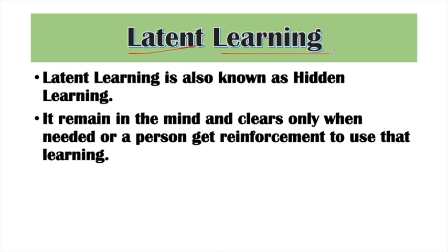Tolman also used the term Latent Learning — which is basically hidden learning. It remains stored in the mind and becomes clear only when needed, when a person gets reinforcement to use it. For example, a child daily goes with his father to school observing the path, storing it as a mental picture. One day, coincidentally, the father doesn't come, so the child follows the same path on his own and reaches school. This is latent learning — we learn it in the environment and use it when needed.